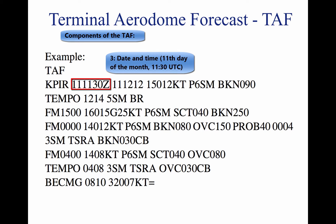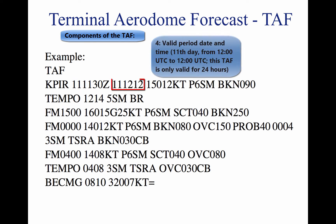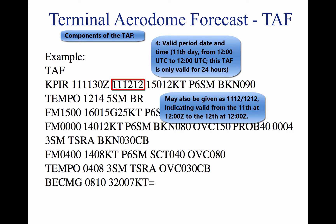3. Date and time: 111130 Zulu. The date is the first two numbers, followed by the time being the last four numbers given in Zulu time. 4. Valid period date and time: 1112/1212. The valid forecast time period is given by a six-digit number group. The first two numbers indicate the date, followed by the two-digit beginning time for the valid period, and the last two digits are the ending time.